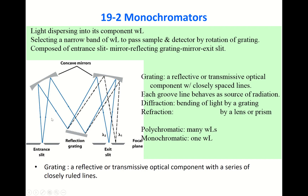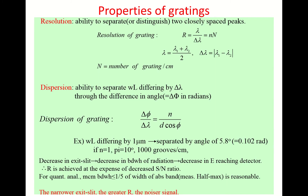In a monochromator there are two slits — an entrance slit and an exit slit. By changing the size of the exit slit, you can control the bandwidth of radiation. Decreasing the exit slit width decreases the bandwidth reaching the detector, so less light enters the detector and noise may increase, but resolution increases.